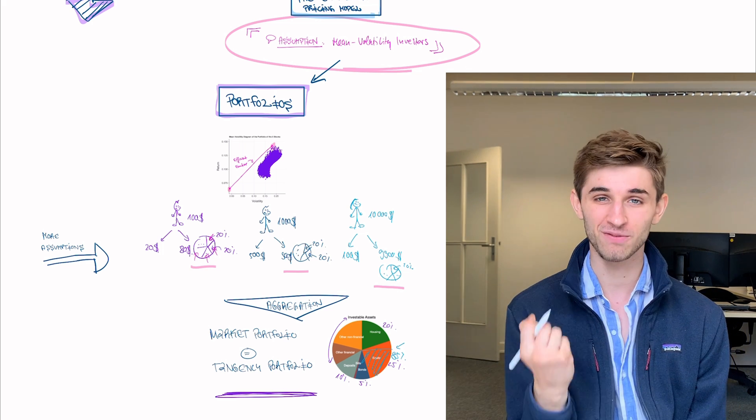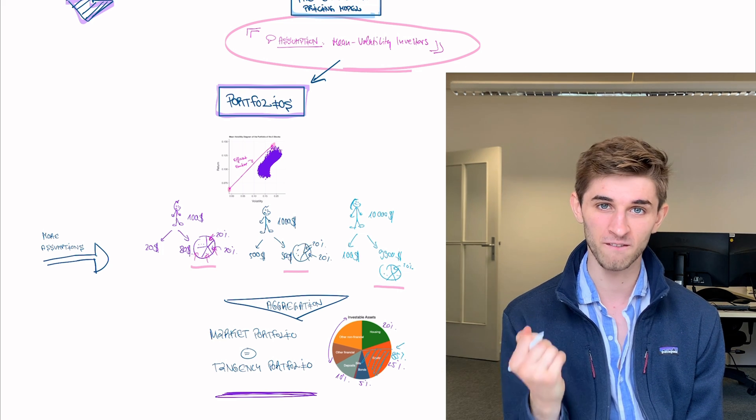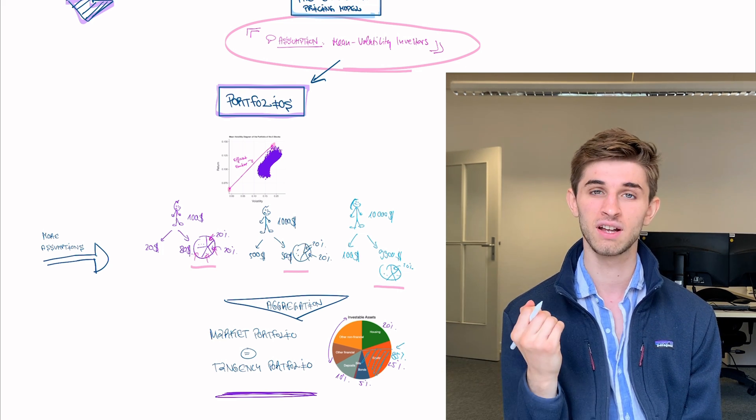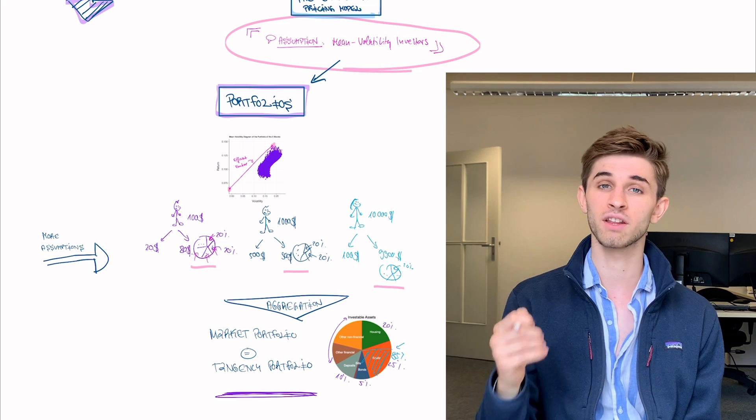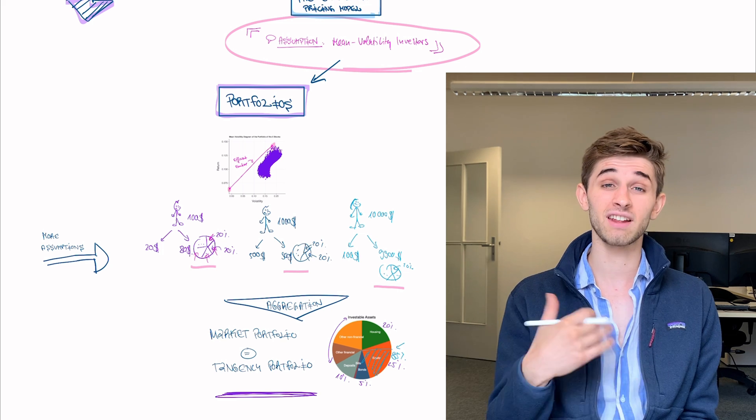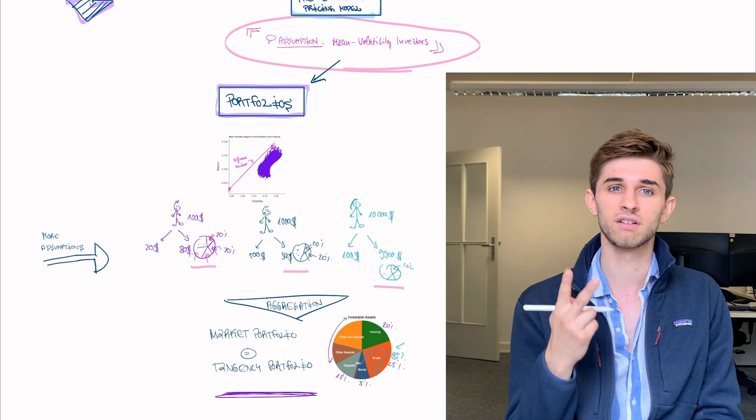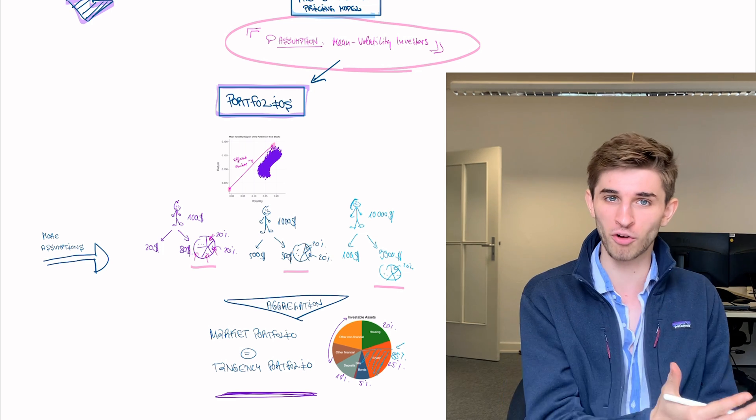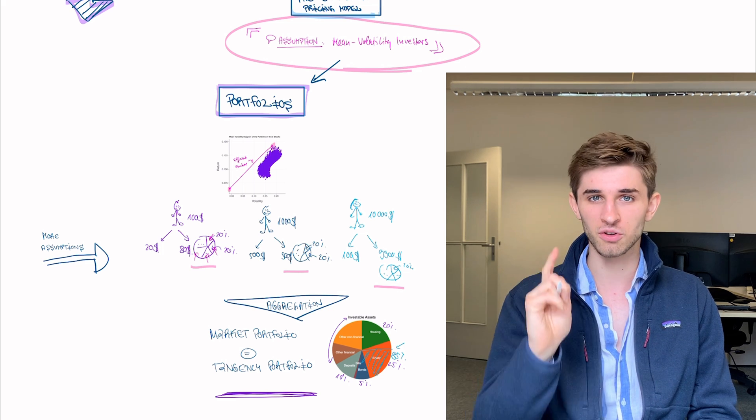And this is very tangible investment advice. It tells you, if you go into the market, just invest into the same proportion as the market does. Because if all the investors are smart and know what they're doing, then the market portfolio will be a smart portfolio. And in the next video, I want to take you a step further. The second statement of the CAPM is not about portfolios, but it's about the prices of individual assets. So see you there.